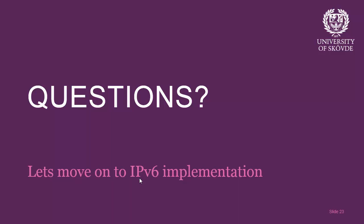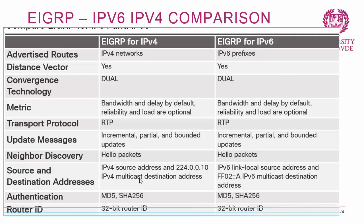Now let's look at EIGRP for IPv6 and compare it to EIGRP for IPv4. Advertised routes are IPv6 vs. IPv4 networks respectively, but both are distance vector protocols using DUAL, the same composite metric, and the Reliable Transport Protocol. Updates and neighbor discovery work the same way. Source/destination addresses differ, authentication uses MD5 and SHA-256 in both cases, and both use a 32-bit router ID.